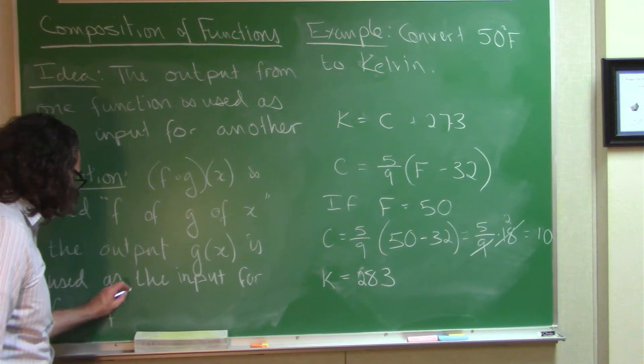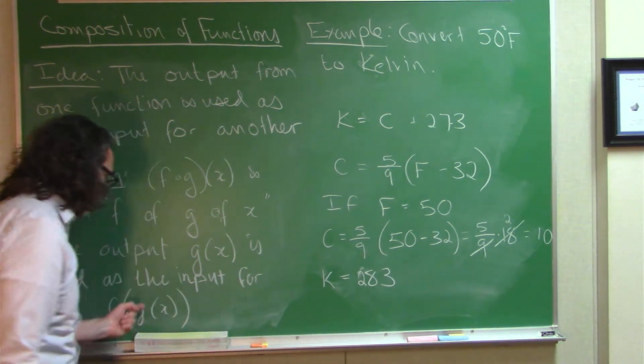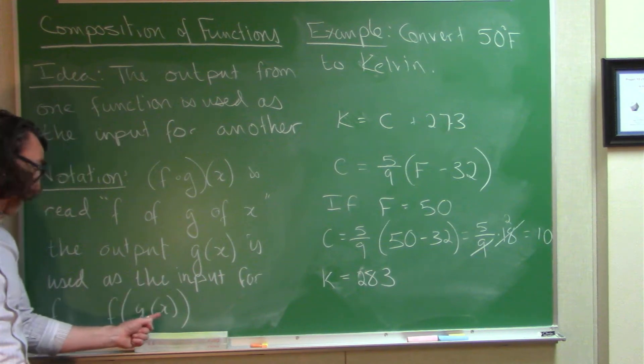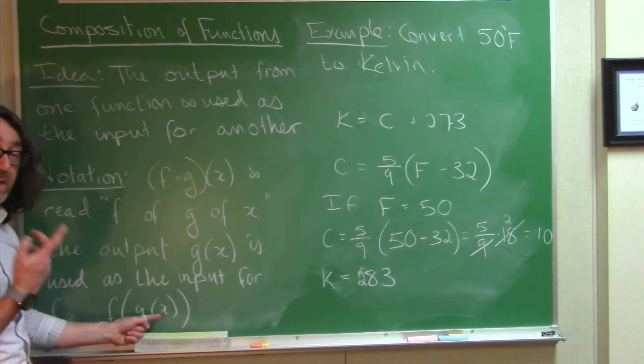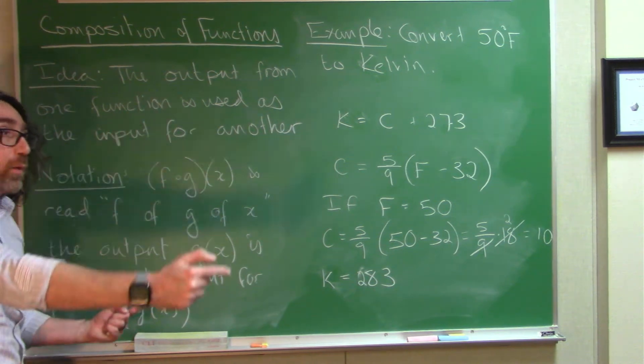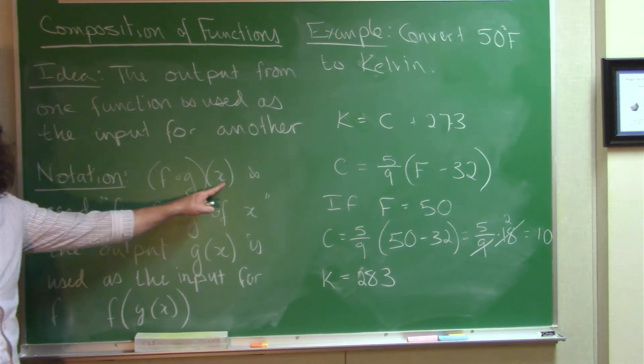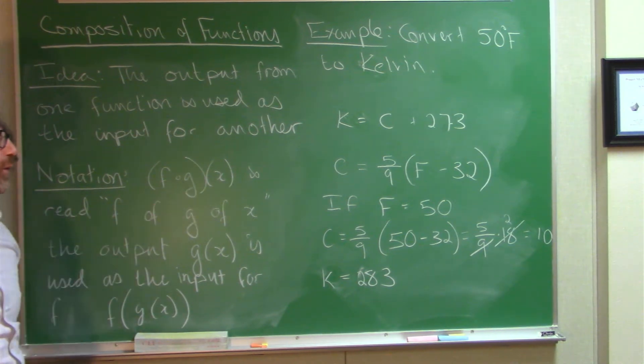In other words, we take X, we put that X, that input value, into G, and then whatever we get out, we use in F. So, in other words, the function that is closest to the input variable goes first.